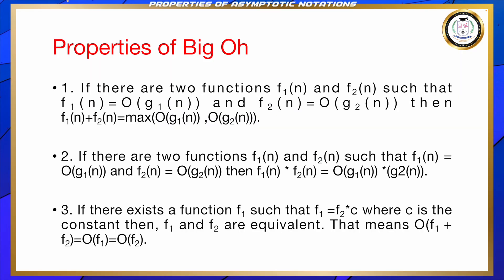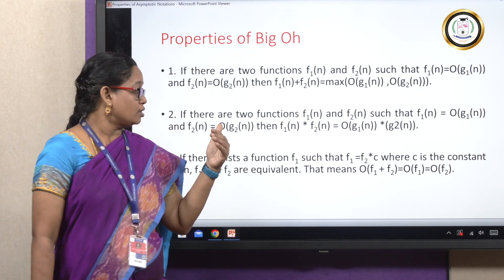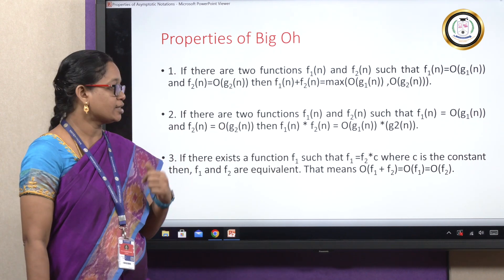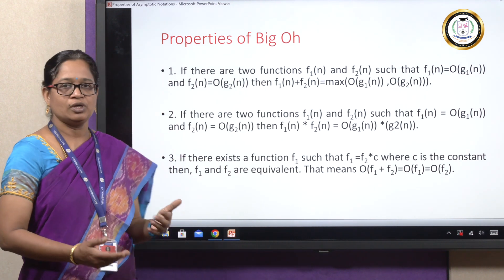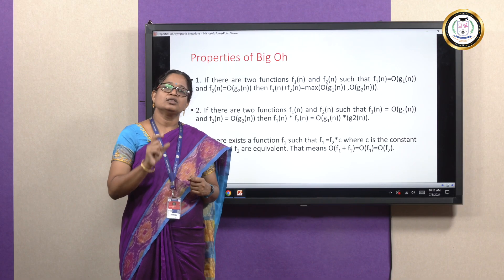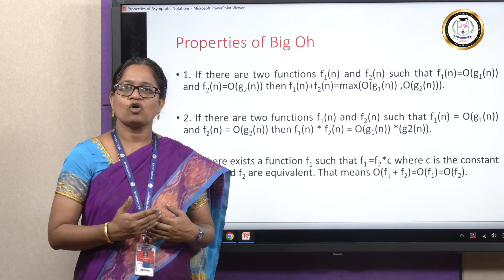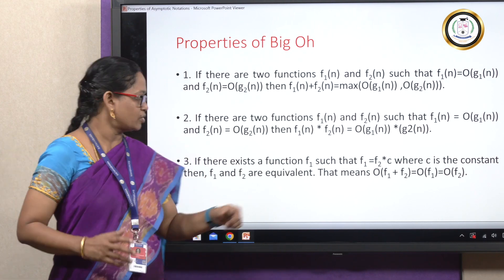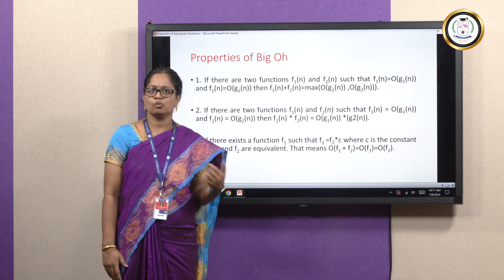The next is another general property. If there exists a function f1 such that f1 = c·f2 (multiplied by a constant c), then f1 and f2 are equivalent. That means O(f1 + f2) = O(f1) = O(f2). If a function is multiplied by a constant, the order of the function does not change. If it is a quadratic equation, even if you multiply by a constant c, it is still a quadratic equation. So O(f1) is also equal to O(f2).